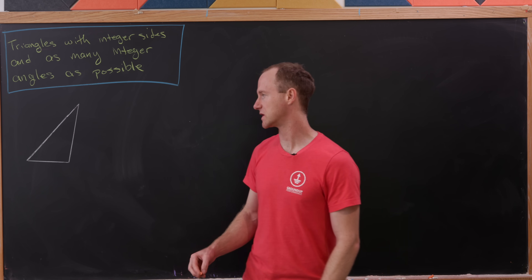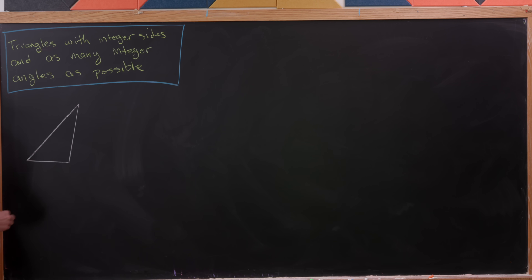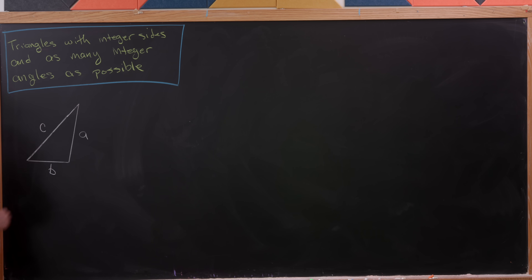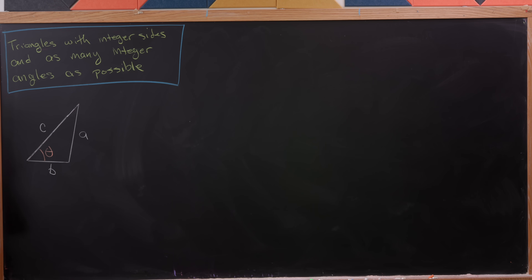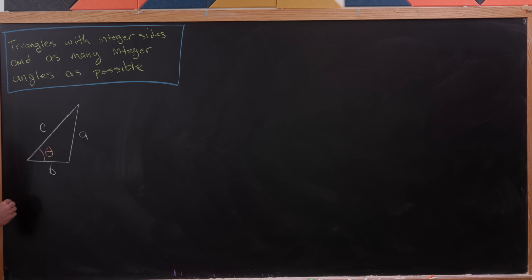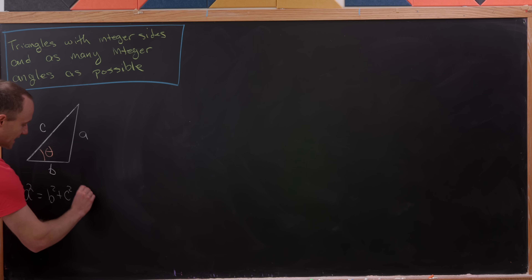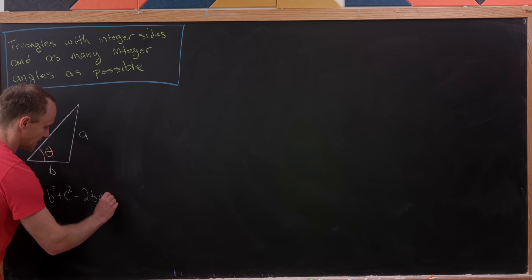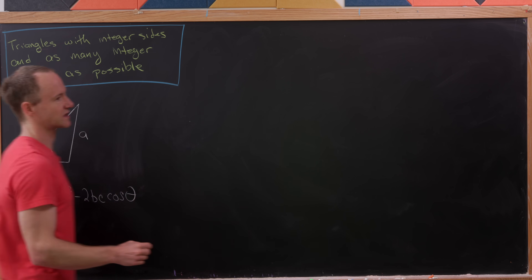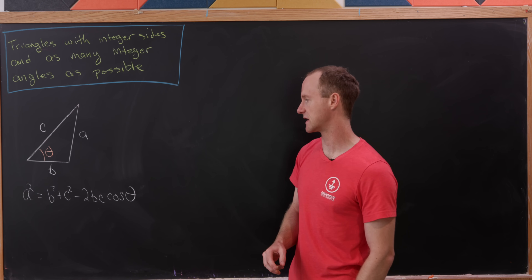Let's say we have a triangle with side lengths A, B, and C, and this angle is theta. The law of cosines relates A, B, C, and theta via the following equation: A squared equals B squared plus C squared minus two times B times C times cosine theta.